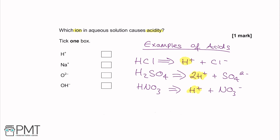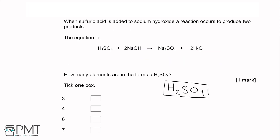So the answer is H+. The next part says when sulfuric acid is added to sodium hydroxide a reaction occurs to produce two products. The equation is H2SO4 + 2NaOH → Na2SO4 + 2H2O. Sodium hydroxide is the NaOH and sulfuric acid is H2SO4.